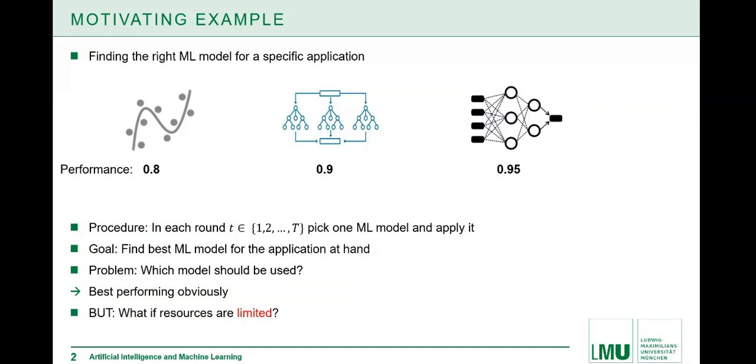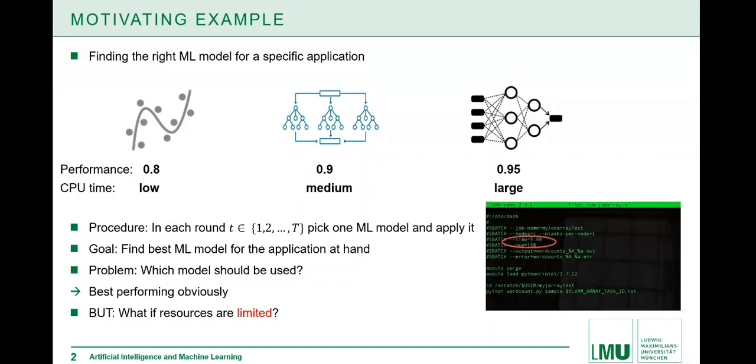But what happens if we also take into account that we have resources which we need to keep an eye on? For instance, if we look at the CPU time, the picture is a bit different because more complex models need more resources, more CPU time, and simpler models need fewer resources. This polynomial regression has a low CPU time.